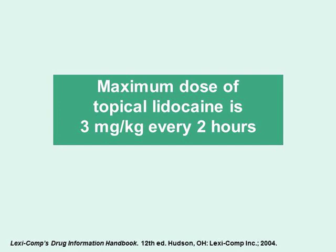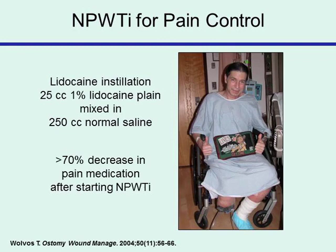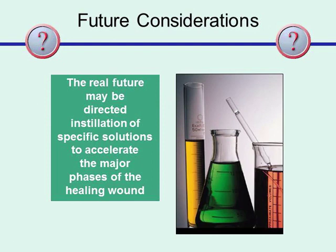Analgesic instillation of dilute lidocaine is extremely effective for managing pain associated with NPWT. The maximum dose of topical lidocaine is 3 mg/kg every 2 hours. A case example is a patient after below-knee amputation with NPWT in place due to circulatory concerns who experienced discomfort both during dressing changes and during therapy itself. Using a very dilute solution — 25 cc of 1% plain lidocaine mixed in 250 cc of normal saline, approximately 5% of the maximum recommended dose — the patient achieved a greater than 70% decrease in pain medication.